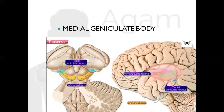Next, moving on to the medial geniculate body: it receives topographically organized projections from auditory fibers from the cochlear nerve and inferior colliculus. It projects to the primary auditory cortex, area numbers 41 and 42 in the cerebrum. So it is related to auditory function. We have now completed the four nuclei: ventral posterior lateral receiving spinothalamic tract, ventral posterior medial receiving trigeminothalamic tract, lateral geniculate body receiving optic sensations, and medial geniculate body receiving auditory sensations.